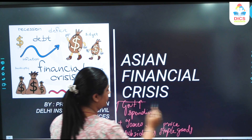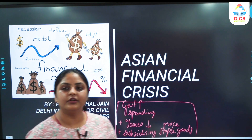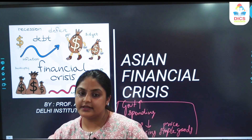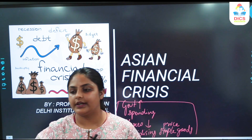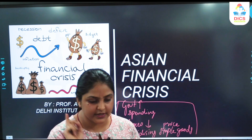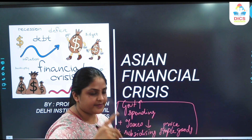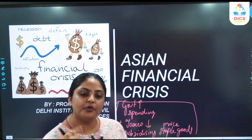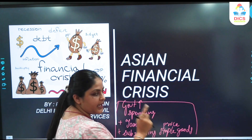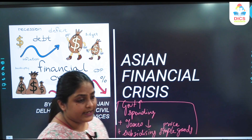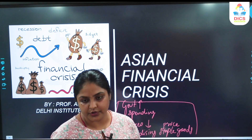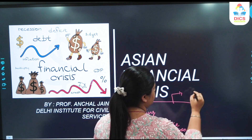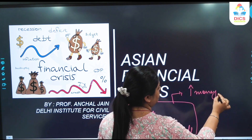All three of these government policy measures have a consequence. When the government increases spending, or when taxes are reduced and you have to pay less taxes, then you have more money available with you. And also you have to pay less for staple food or staple goods — this results in the public having more money in their pocket.